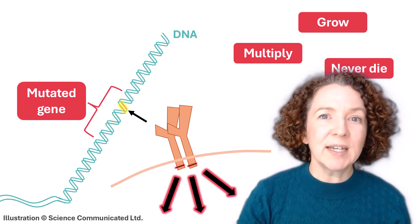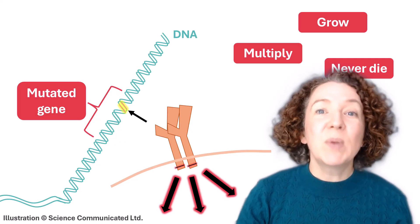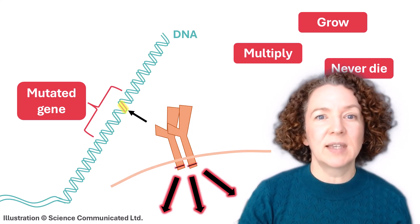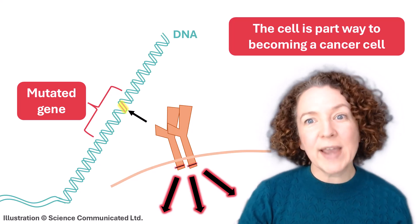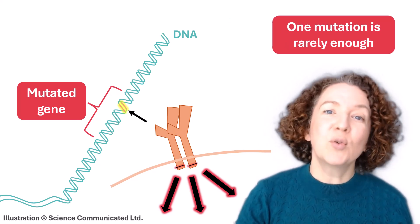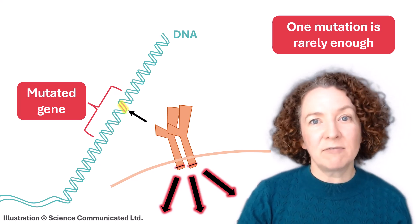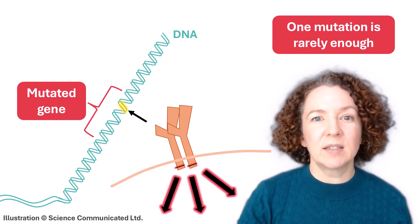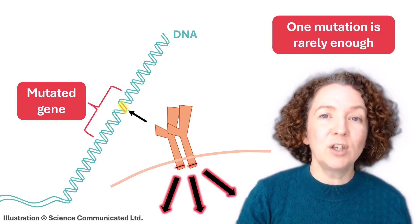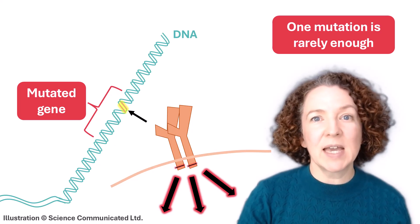By the way, calling a gene damaged is the same as saying that it's become mutated. Because of this faulty protein and the powerful signals it's giving to the cell, the cell is now part way to becoming a cancer cell. But one mutation causing the cell to produce one faulty protein is rarely enough to turn what was a healthy cell into a cancer cell. It's only if several mutations accumulate in key genes that the cell eventually might become a cancer cell.